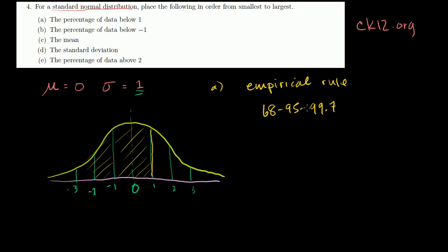I call that a better way because it essentially gives you the rule — these are just the numbers you have to memorize. If you have a calculator or a normal distribution table you don't have to do this, but sometimes in class people want you to estimate percentages. So let's use the empirical rule to find the area under the bell curve all the way up to 1. The empirical rule tells us that the middle area between one standard deviation to the left and one standard deviation to the right is 68%.